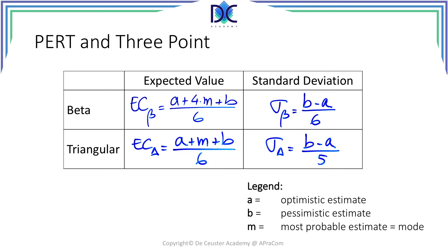And finally, our dear old friends — PERT and three-point estimation. The same formulas, but now instead of using time like we did before, the optimistic estimate A would be the lowest cost of the activity, B will be the pessimistic cost, and M will be the most probable estimate — the mode. The formulas are exactly the same. You can have exercises calculating the three-point values or the PERT values for activities based on these three estimates.